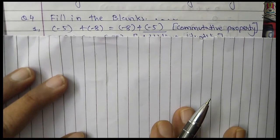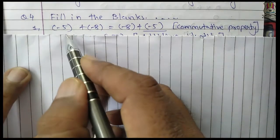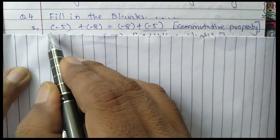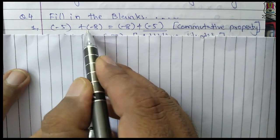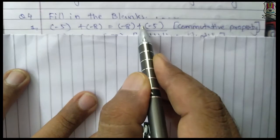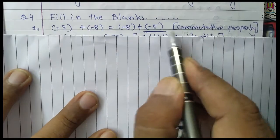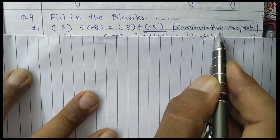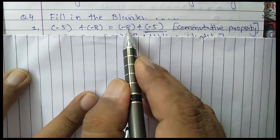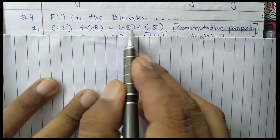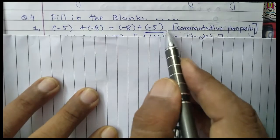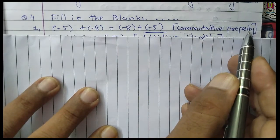Question number 4: fill in the blanks. Number 1: minus 5 plus minus 8 equals minus 8 plus minus 5. The order of the integers is changed. This is called the commutative property.